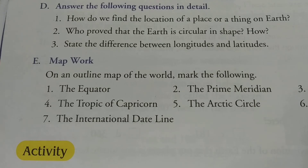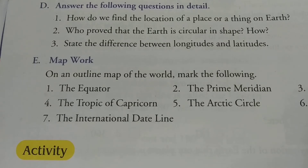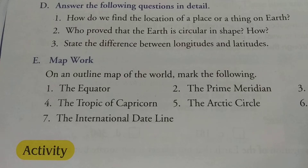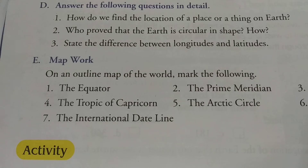Now in the longitude column, from the next line make another bullet for the second point and write: 'Longitudes are drawn in the north-south direction.' Now go to the latitude column, make the second bullet and write: 'Latitudes are drawn in the east-west direction.' Full stop.